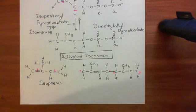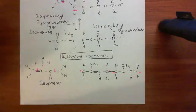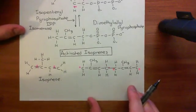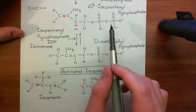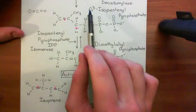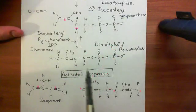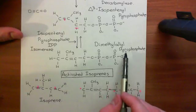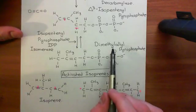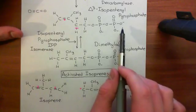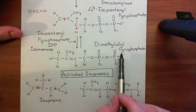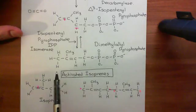Welcome back to this next video in which we are discussing the biosynthesis of cholesterol. Where have we got to so far? We have got to the production of these two activated isoprenes: delta-3-isopentenyl pyrophosphate and dimethyl-allyl pyrophosphate. What we now want to see is how we can use these to synthesize the cholesterol molecule.